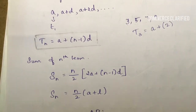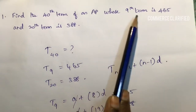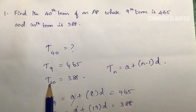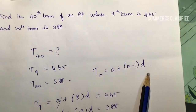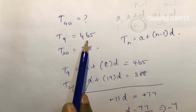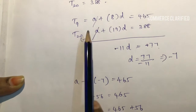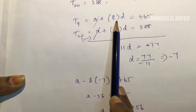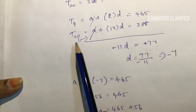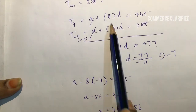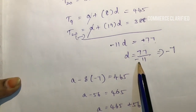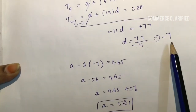Let's look at an example problem. Find the 40th term of an AP whose 9th term is 465 and 20th term is 388. Using the formula T_n equals a plus (n minus 1)d: T9 gives a plus 8d equals 465, and T20 gives a plus 19d equals 388. Subtracting: minus 11d equals 77, so d equals 77 divided by minus 11, which gives d equals minus 7.